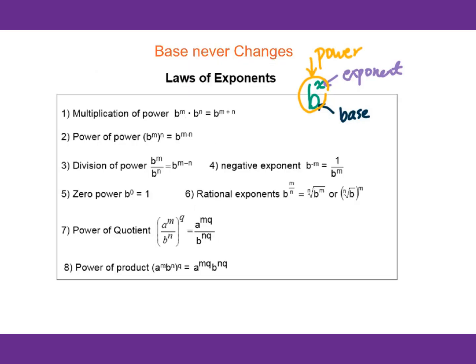For the law of exponents, remember the base never changes. When you do multiplication of powers, the base stays the same and you add the exponents. For power of a power, you multiply the exponents. For division of powers, you subtract the exponents. Zero power always equals 1. For negative exponents, that means 1 over — it becomes a reciprocal.